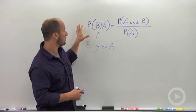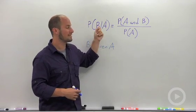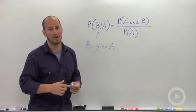So the general form for conditional probability. Probability of B given A is equal to the probability of A and B over the probability of A.